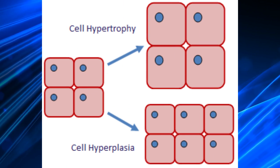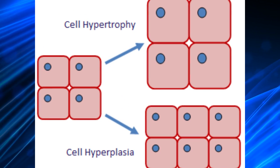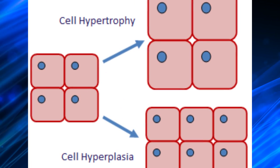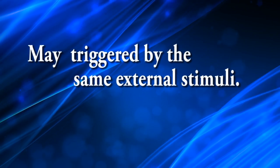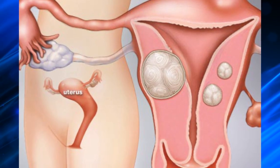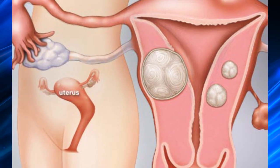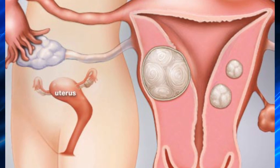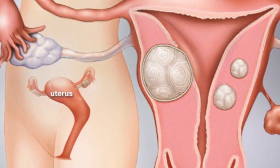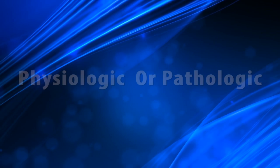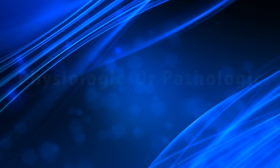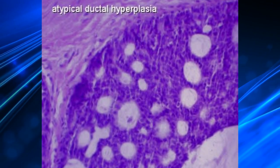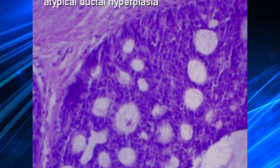Although hyperplasia and hypertrophy are two distinct processes, they frequently occur together and may be triggered by the same external stimuli. For example, hormone-induced growth in the uterus involves both increased numbers of smooth muscle and epithelial cells and enlargement of those cells.